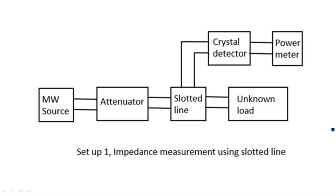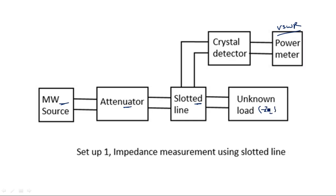The bench setup arrangement is as follows: a microwave source, followed by an attenuator, then a slotted section carriage with a crystal detector. On the slotted section carriage we have a probe carrier, followed by a VSWR meter or power meter. The other end of the slotted section carriage is connected with the load, which has impedance ZL.